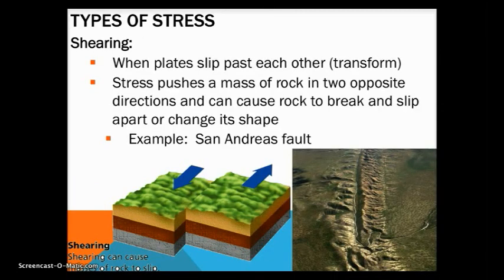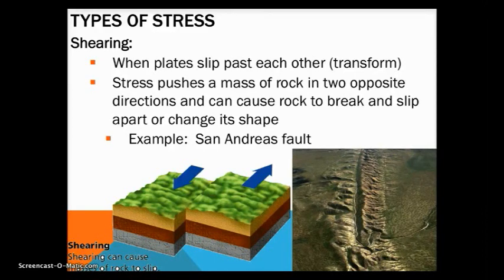Shearing occurs at transform boundaries where plates slip past each other. Stress pushes the crust in opposite directions, causing rock to break apart or slip apart. The arrows slide past each other, just like transform boundaries. The San Andreas Fault was created by shearing.